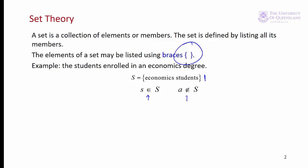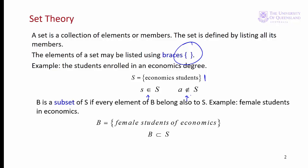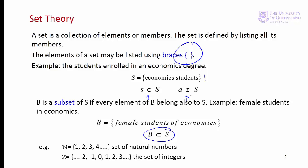The same symbol with a line through it indicates that an object is not a member of a set. Here, object A is not a member of set S. We can define a subset of members of a set — for example, economics students who are female. We represent that symbolically as B is a subset of S. Another example is that the set of natural numbers, or counting numbers, is a subset of all integers.